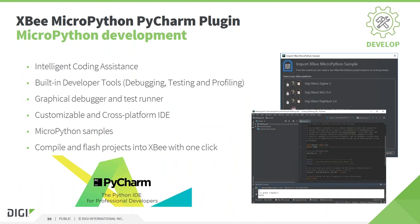For the development of MicroPython applications, we provide a plugin for the popular PyCharm IDE, which is used by many Python developers. It automatically detects connected XBee modules; you can deploy or debug applications with one mouse click, which includes standard debugging tools such as setting breakpoints and stepping through the code. It includes getting-started guides for each supported XBee product and a large number of samples for different use cases.